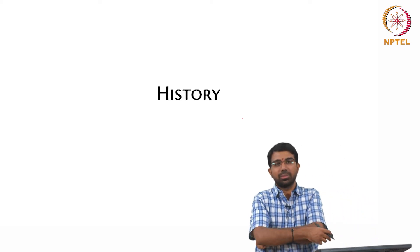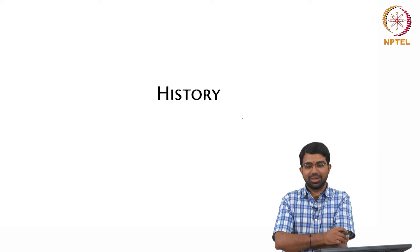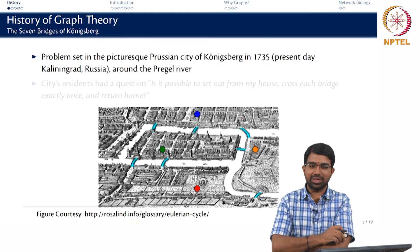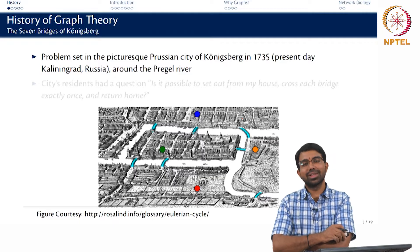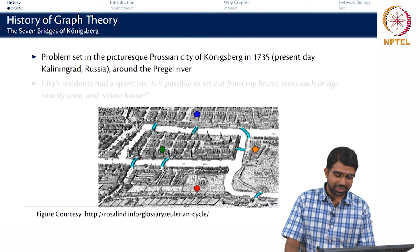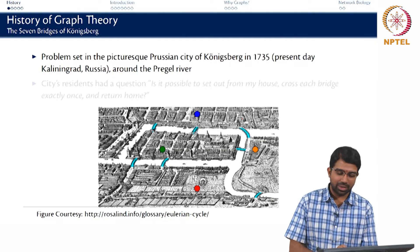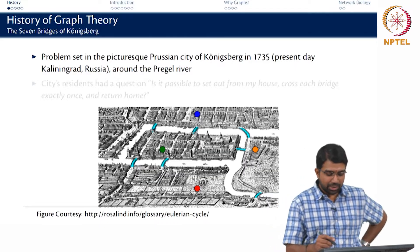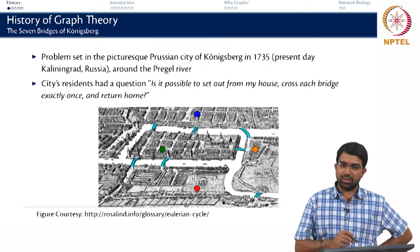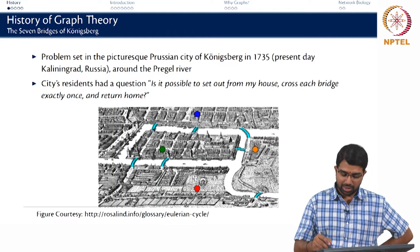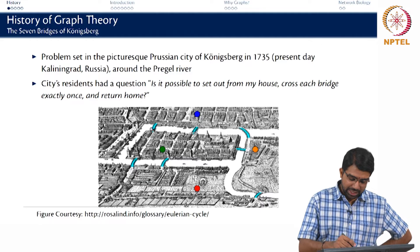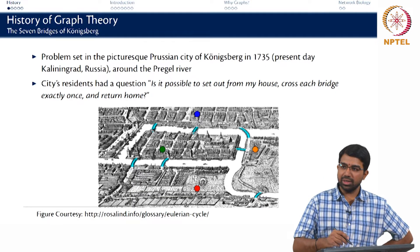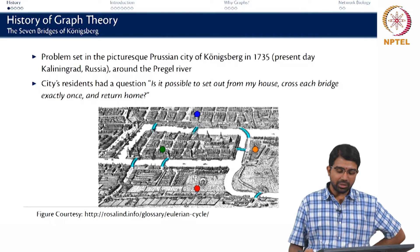This is a very famous problem, well studied and well quoted in literature. It starts back in 1735 when recreational mathematics was a big thing — people used to do a lot of math for fun. A fun question that some people asked was: they lived in the city of Königsberg, presently in Russia around the Pregel river. You can see the river there, and the question the city's residents had was: is it possible to set out from my house, take each of these bridges exactly once, and come back to my house?